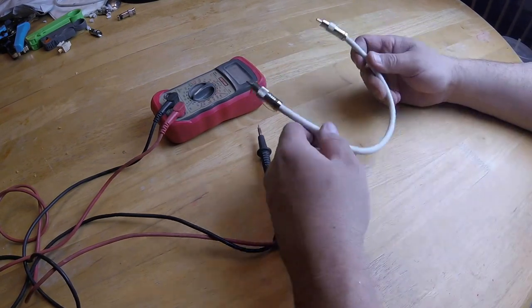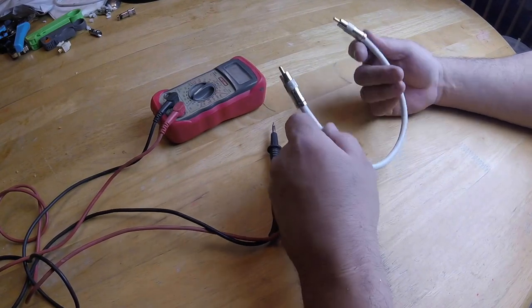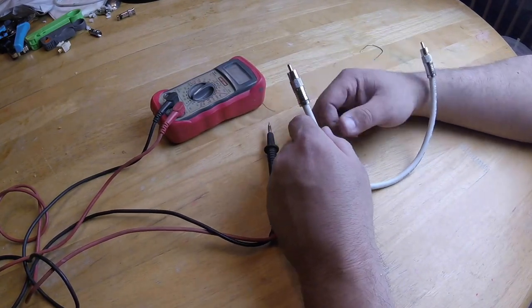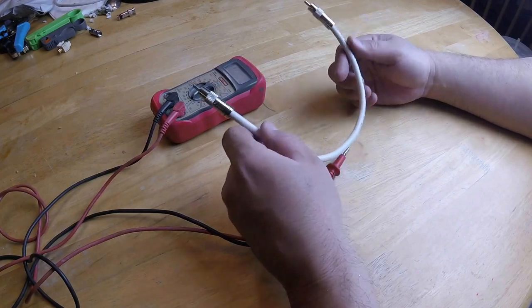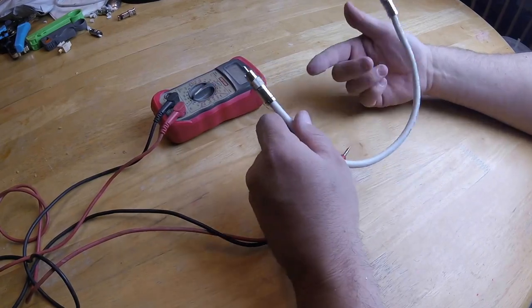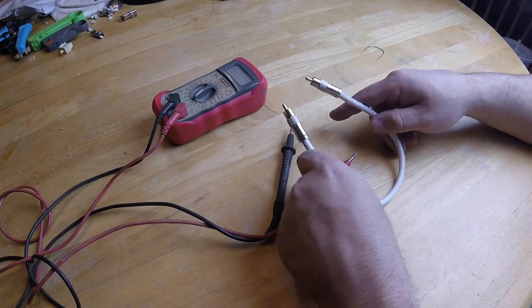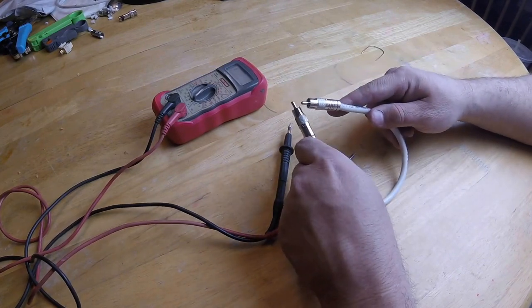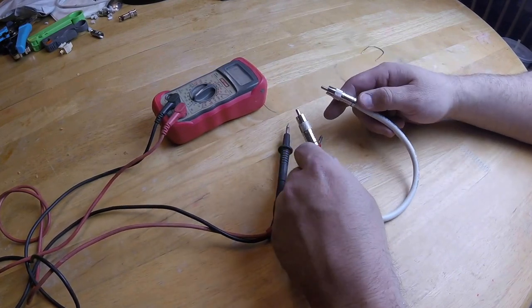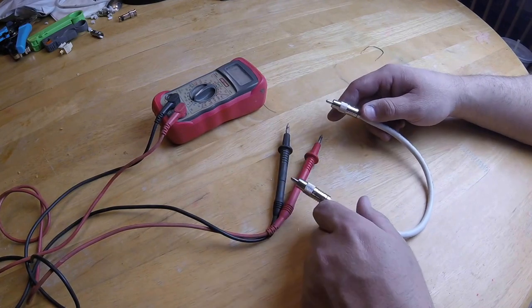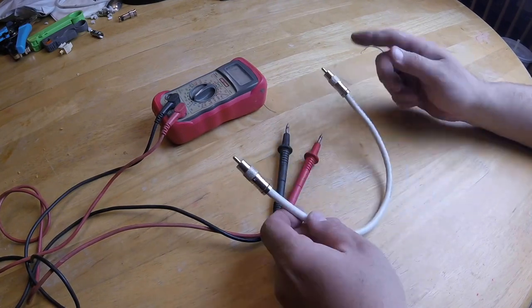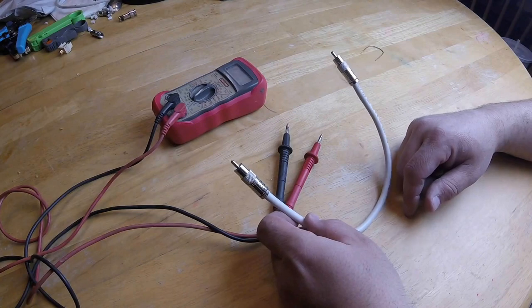So since we do have the ability to make our own wires, sometimes you can have problems. Sometimes these connectors can go bad, sometimes the wire's bad. Maybe it's not a wire that you made, maybe it's a wire that you bought. Those can sometimes have problems too. So we need to be able to check these wires because when it's all said and done, you might be having a problem that you're chasing for hours. You can't figure it out. Check your wires, just double-check.